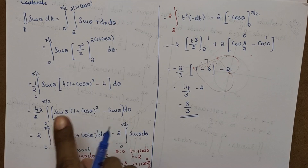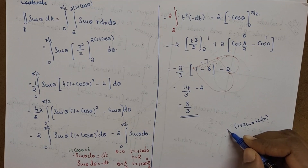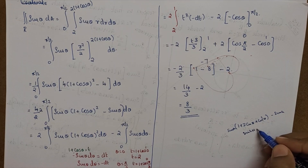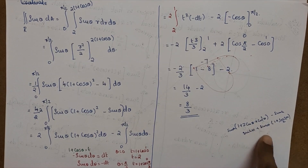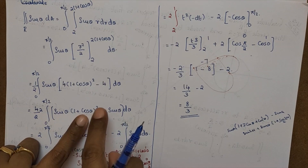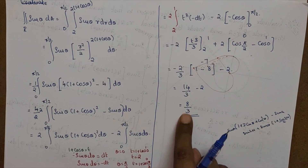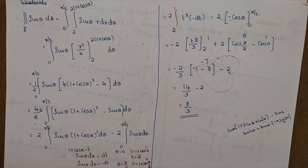Expanding (1 plus cos theta) whole square gives 1 plus 2 cos theta plus cos squared theta. We can also use this expansion approach and apply trigonometric identities. We will multiply out the whole square and expand, then take the derivative of each term and integrate. This confirms the answer using the expansion method.